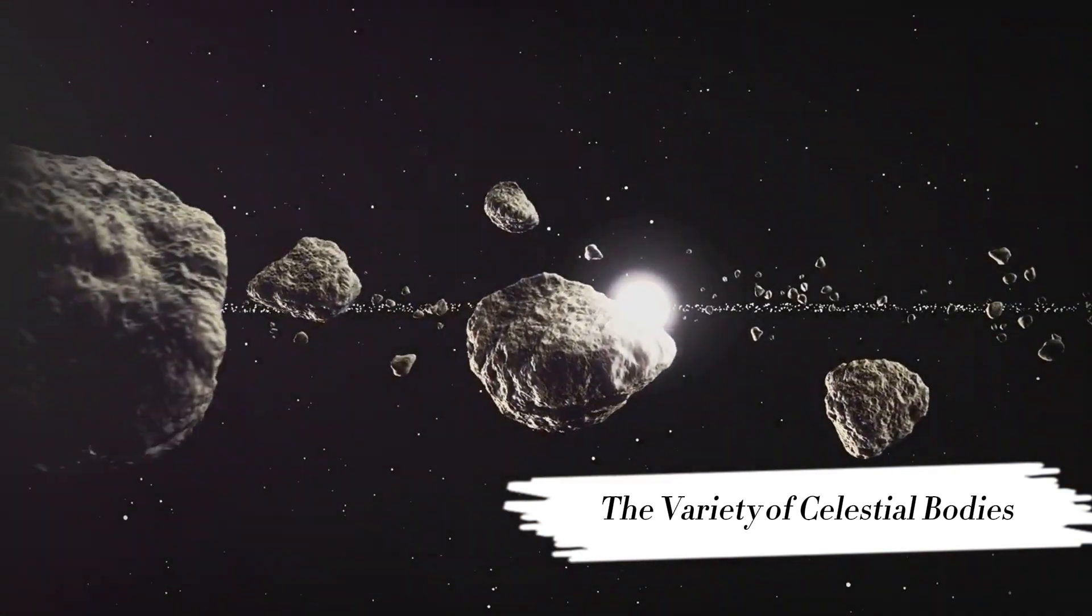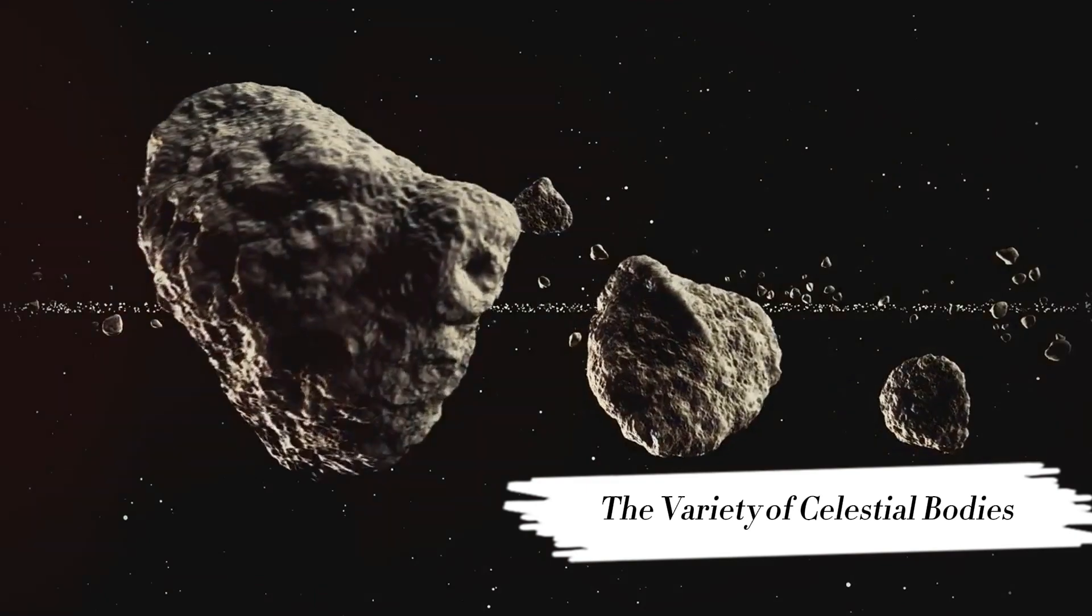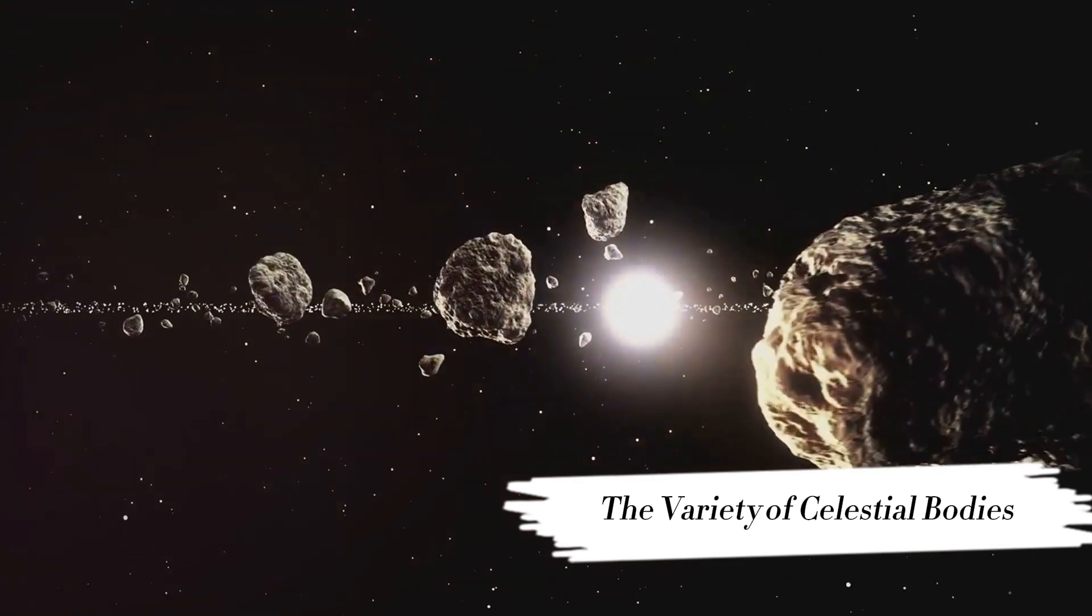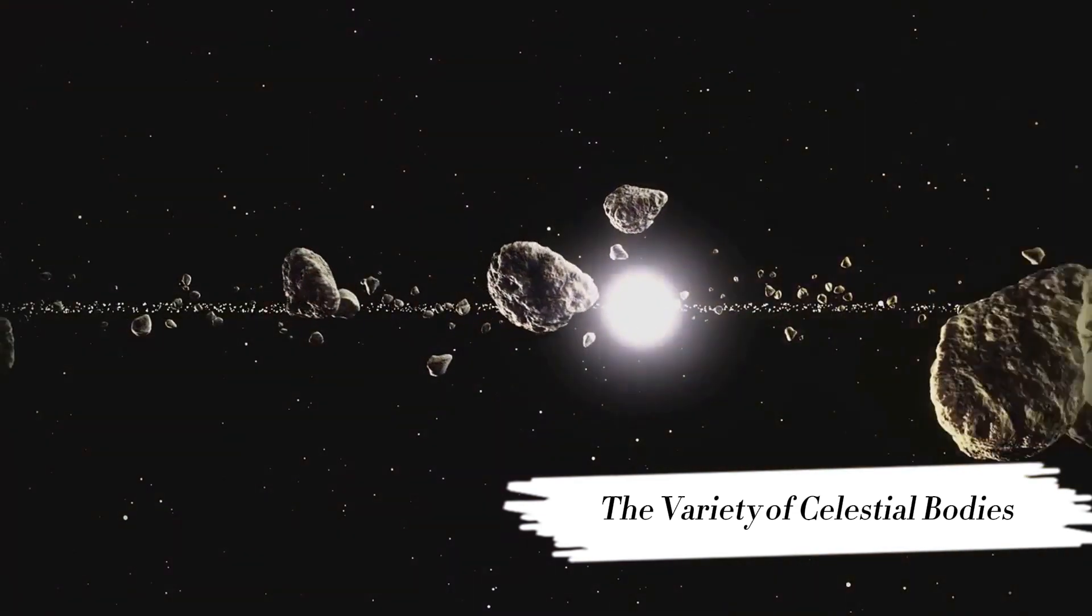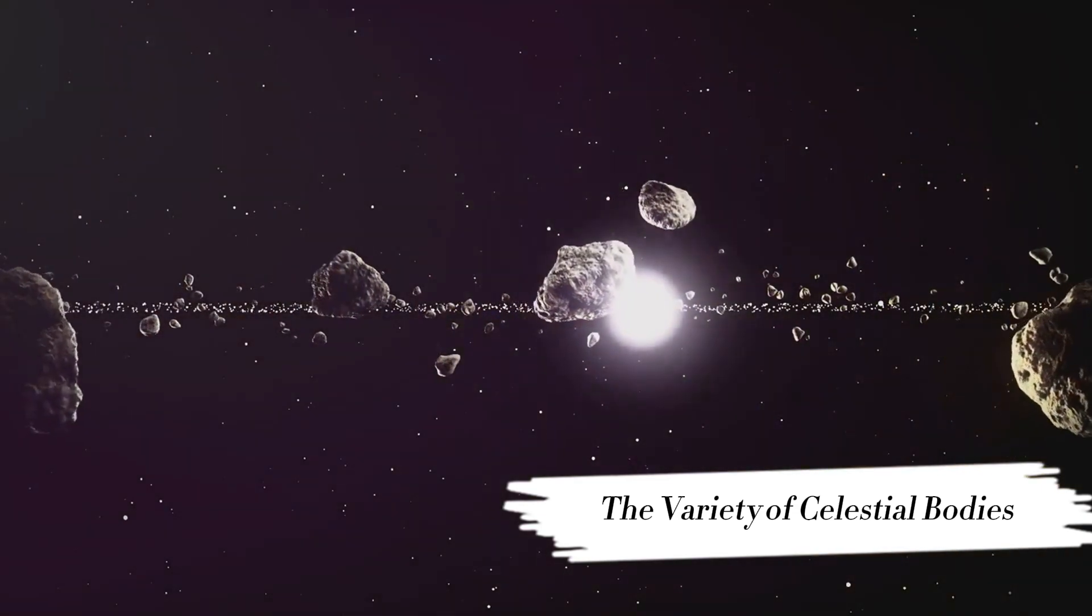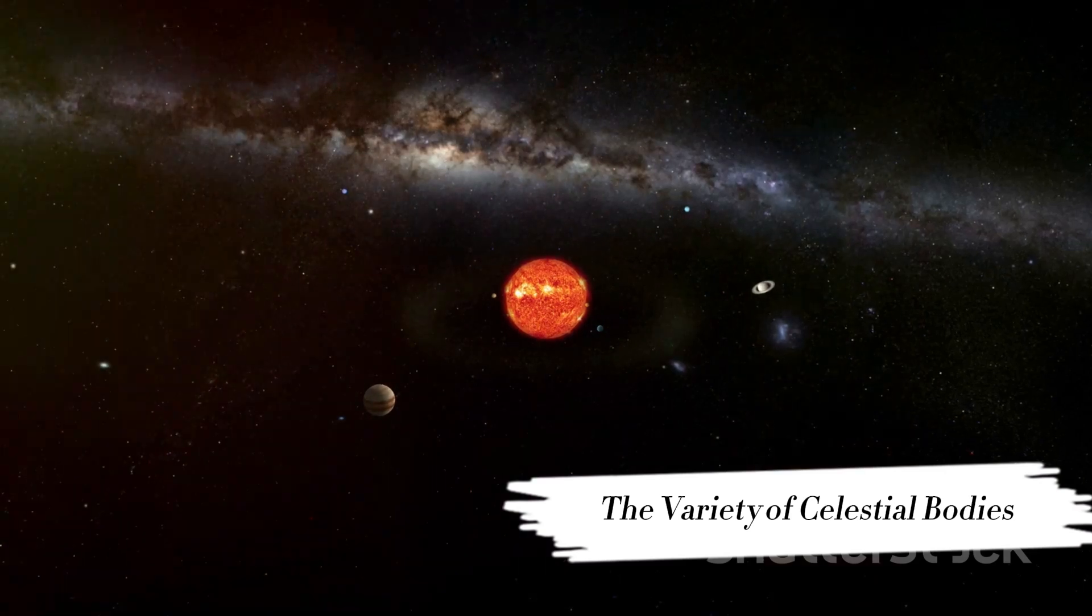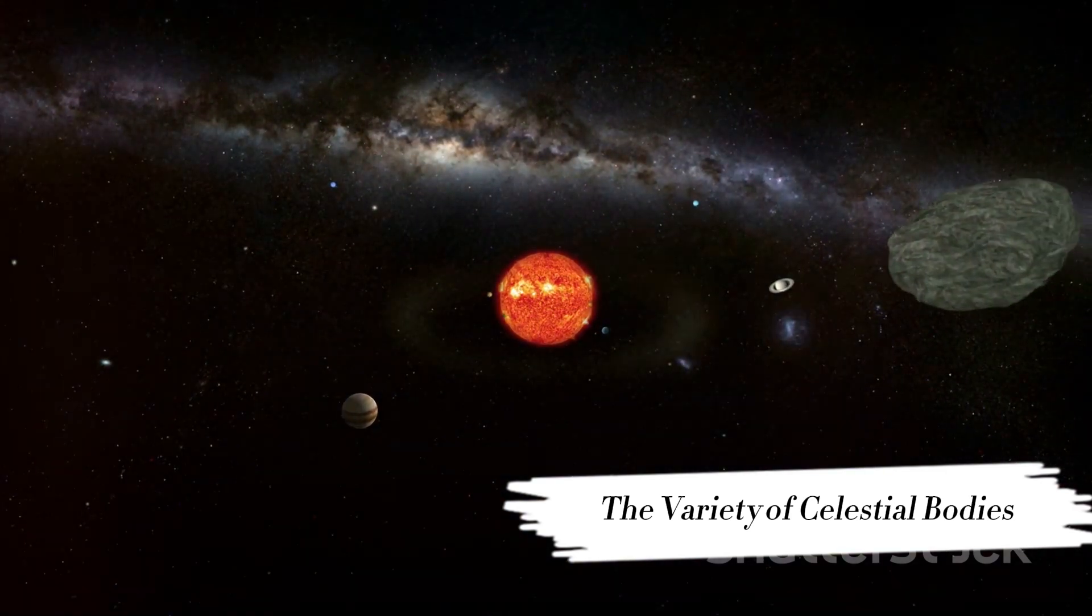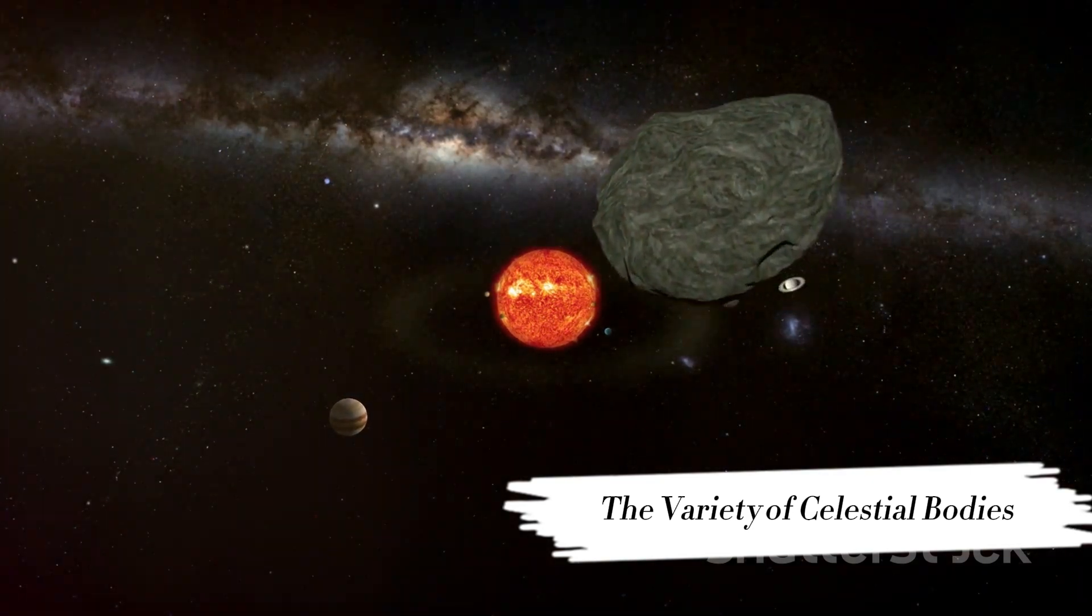Planets, the familiar celestial bodies of our own solar system, are scattered throughout the universe. They orbit around stars, coming in all shapes, sizes, and compositions. Some are gas giants like Jupiter, while others are rocky, like Earth. And then, there are those that defy categorization, reminding us of the universe's capacity for surprise.